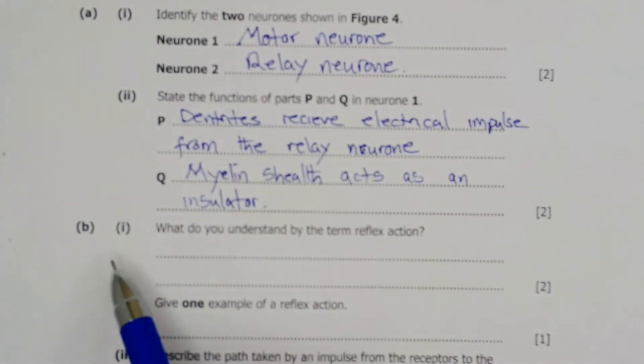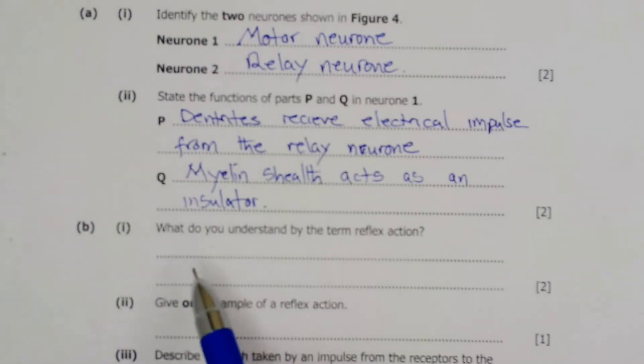Okay. Next part B1. What do you understand by the term reflex action? So a reflex action is simply an automatic response to a stimulus. So whatever you respond to automatically without thinking about it, that is what we are calling a reflex action.